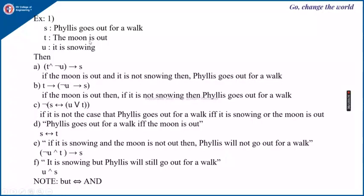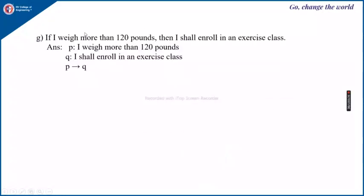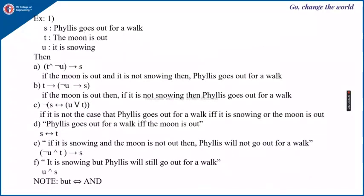Other examples: suppose S is a proposition which represents Phyllis goes out for a walk, T represents the moon is out, and U represents it is snowing.